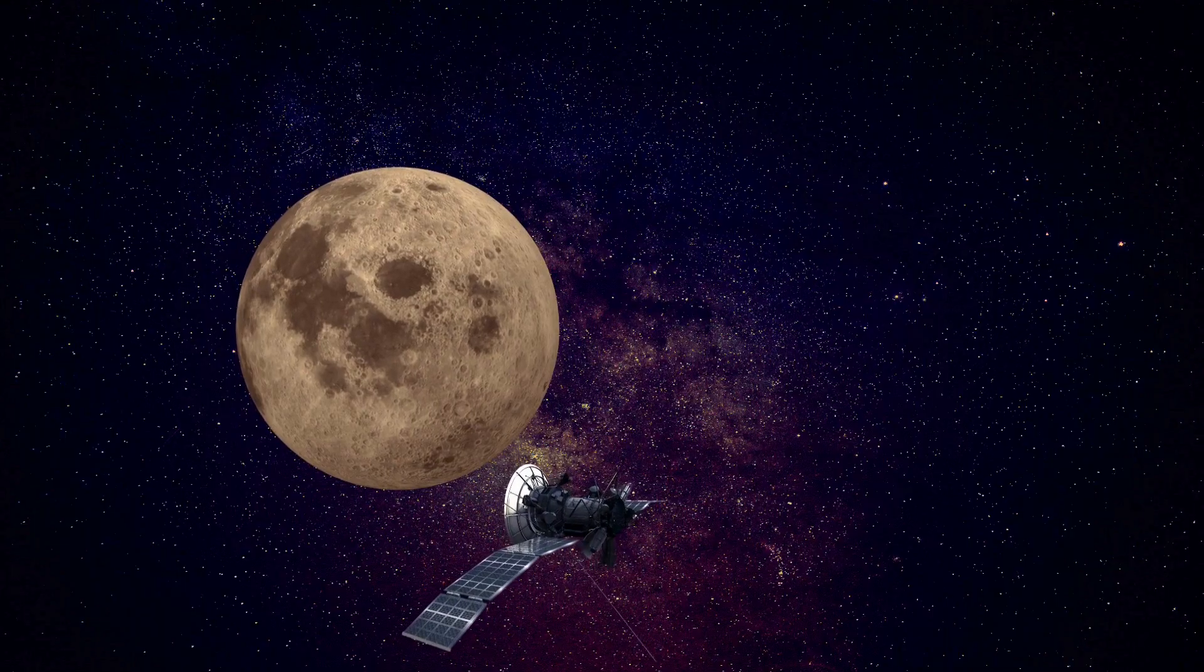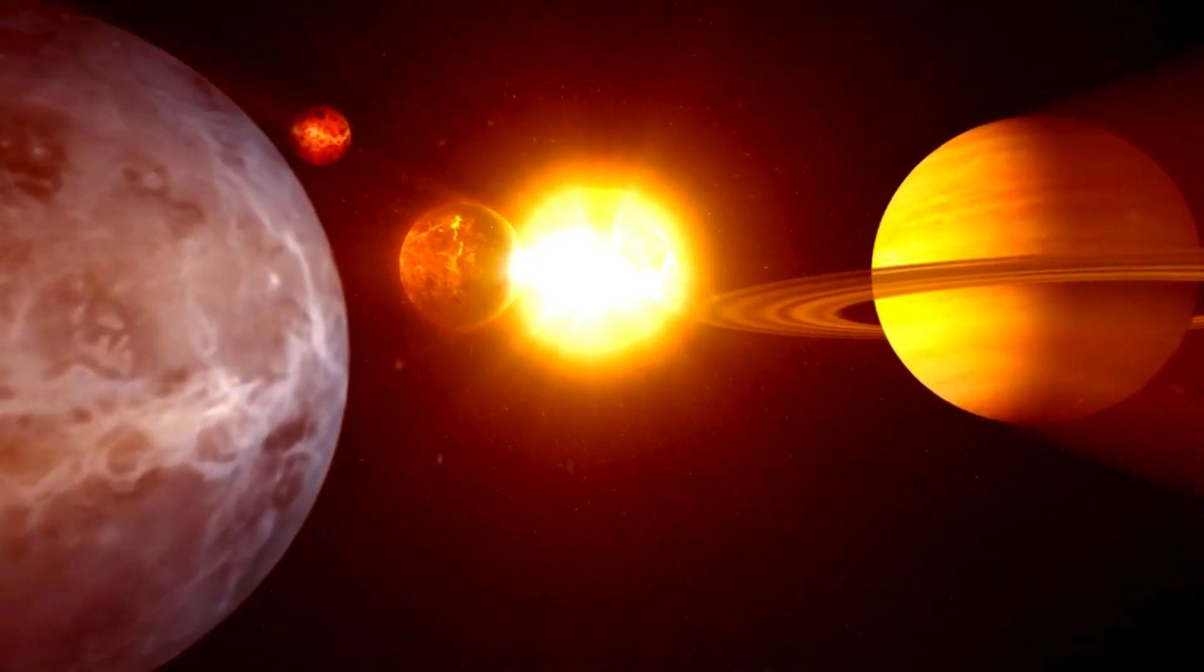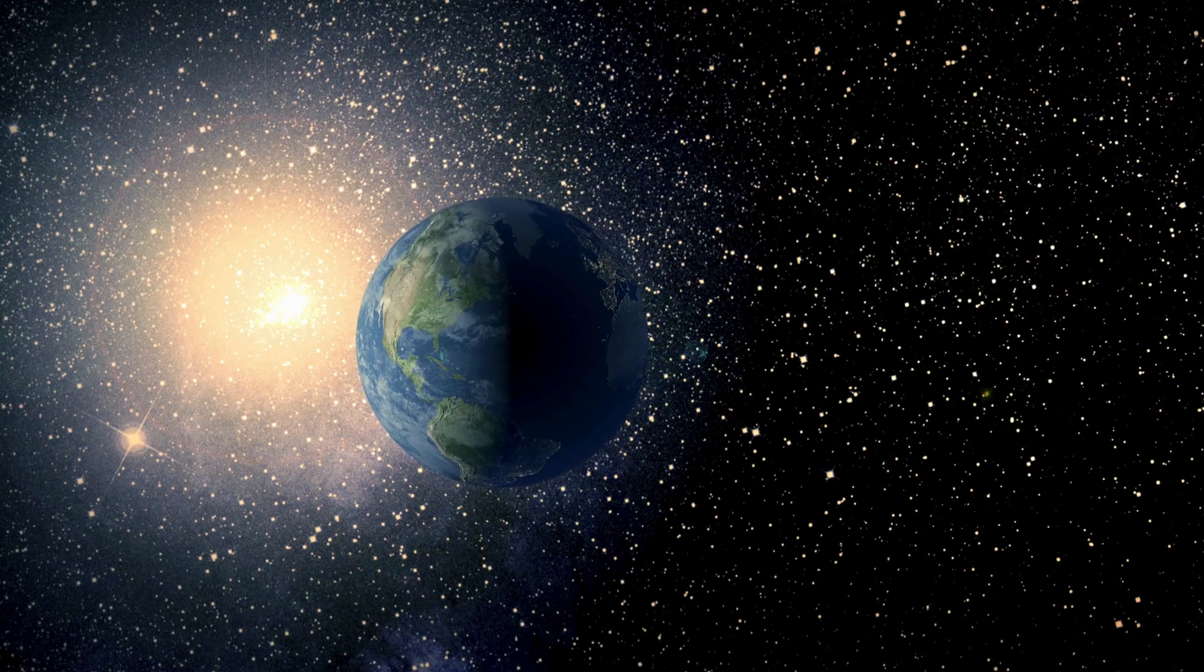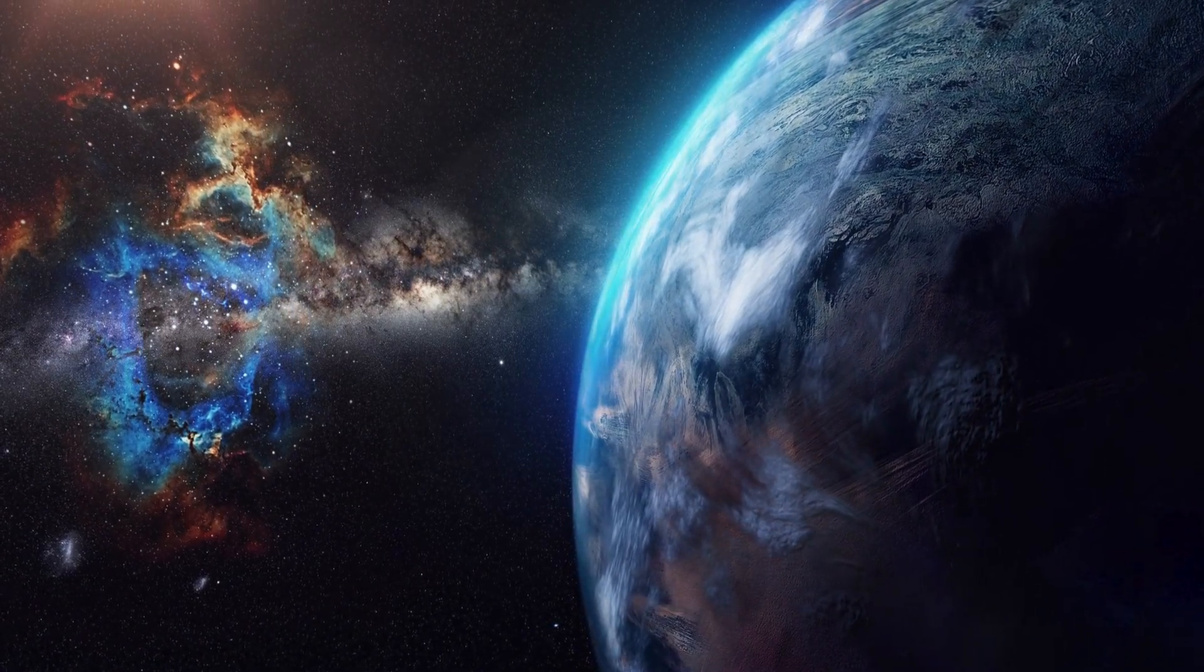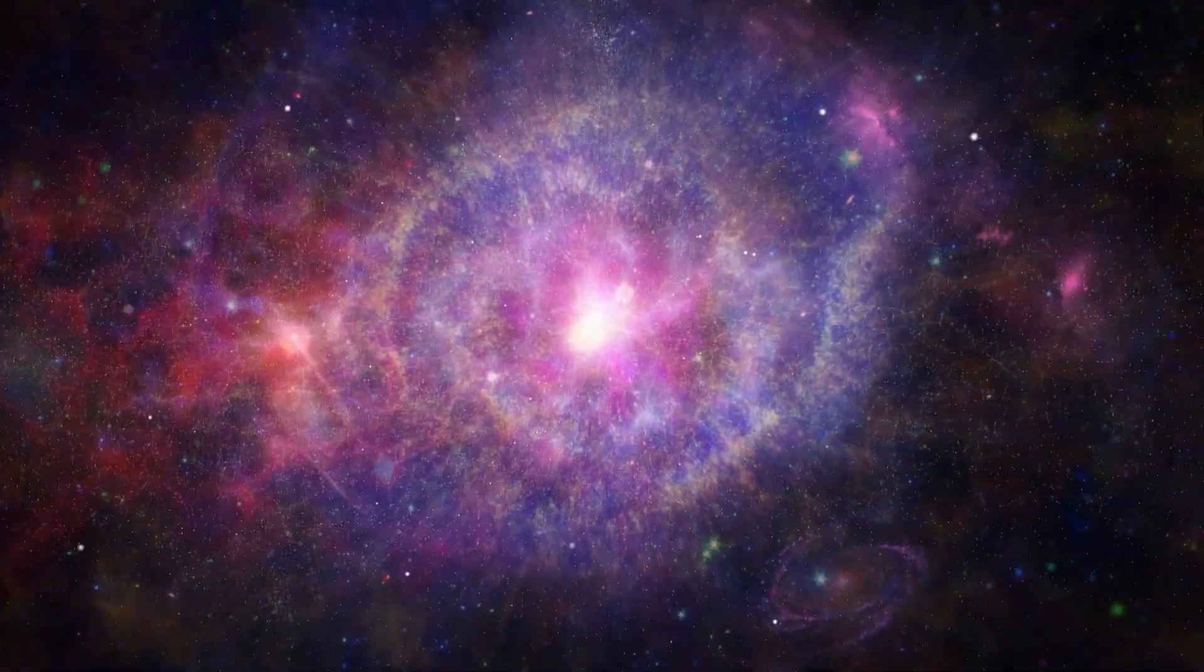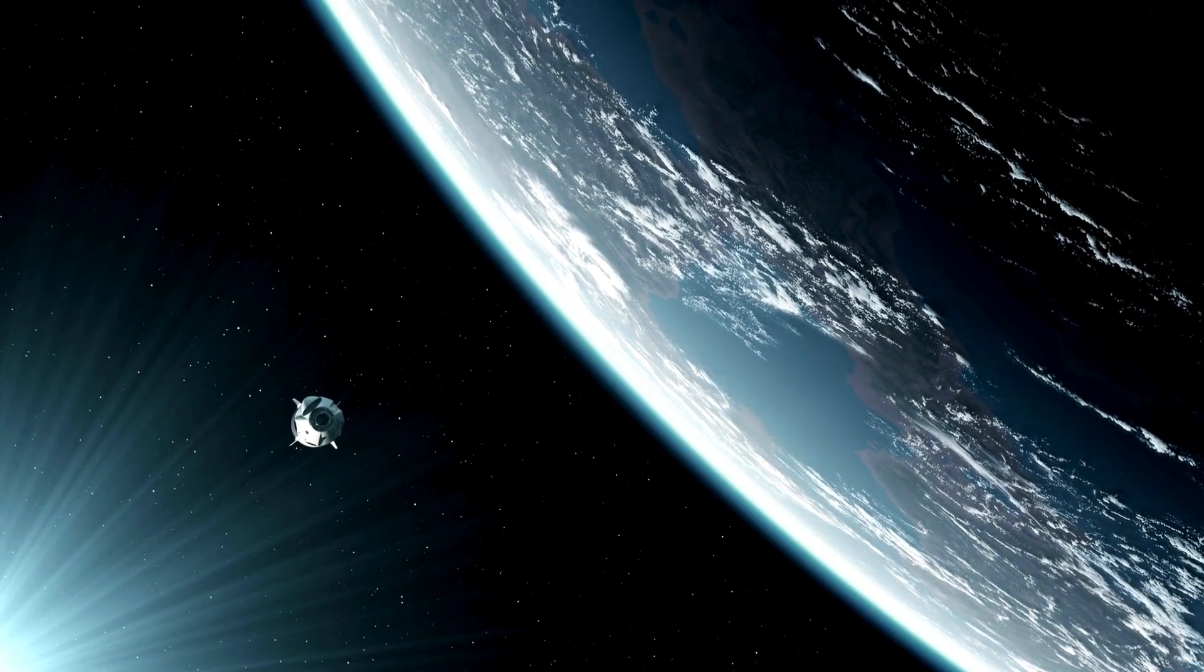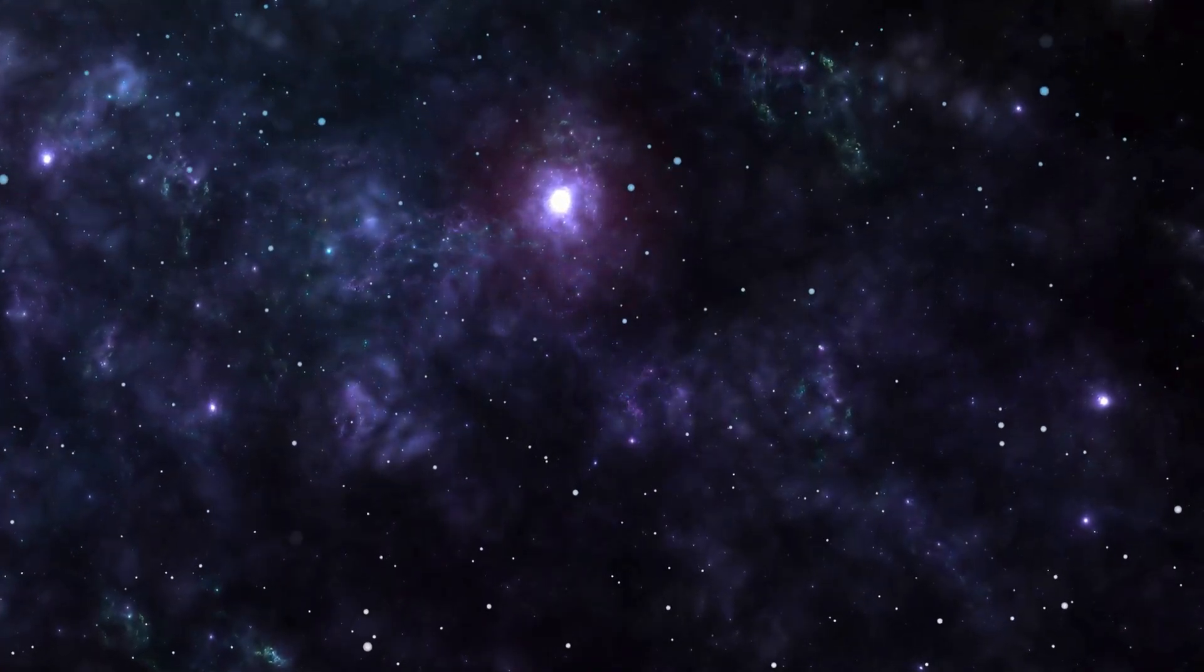What it achieved defied all expectations. It captured storms the size of Earth, rings we never knew existed, and icy moons with active geysers. It even revealed dynamic atmospheres and mysterious magnetic fields on worlds we had only ever seen as dots in the sky. But Voyager 2 wasn't just sending back pictures, it was changing the way we saw the universe. After its grand tour, the probe kept going, breaking past the heliosphere and into interstellar space in 2018.